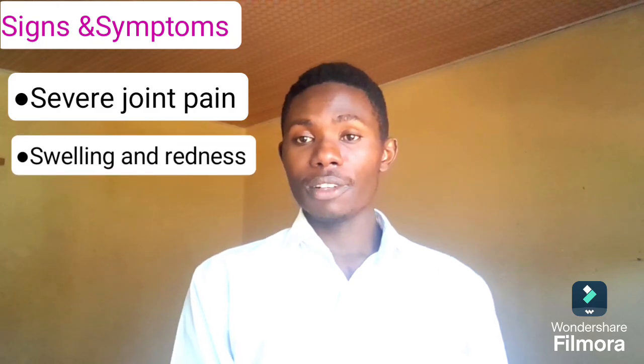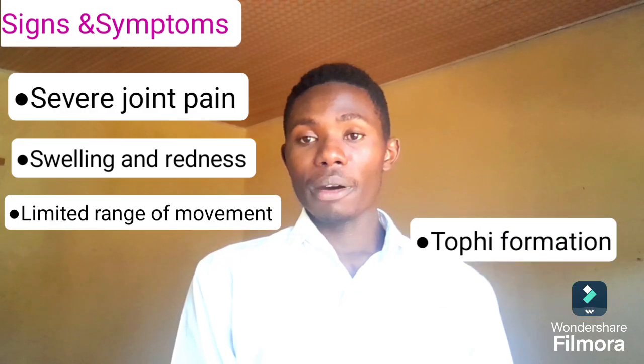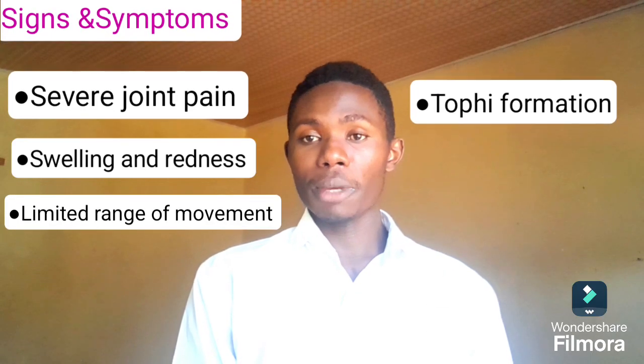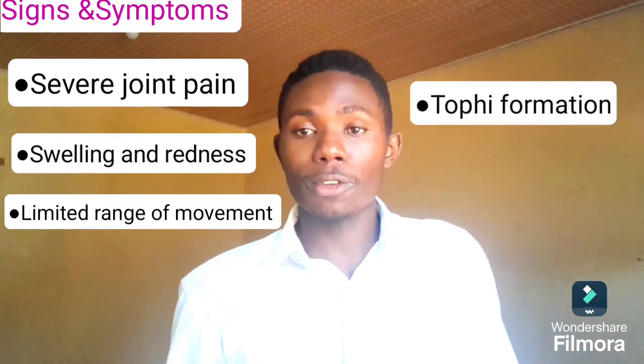Now let's look at the signs and symptoms — the clinical features of Gouty Arthritis. Number one, we have severe joint pain, which usually occurs in the big toes but can also involve other joints like the ankle or knee joint. Number two, we have swelling and redness at the affected site. Number three, limited range of motion — difficulty in moving the affected joint. Number four, tophus formation — a hard deposit of uric acid crystals under the skin.